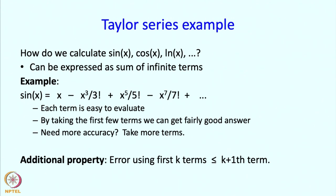This series has an even nicer property: we can get a good estimate of how bad our error is. If we evaluate the sum to the first k terms, it is possible to prove that the error is going to be smaller than the (k+1)th term. So if we use k terms, the next term actually gives us a bound on the error.